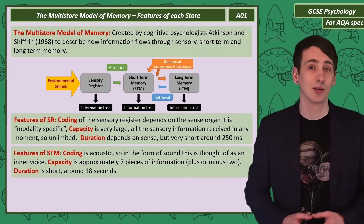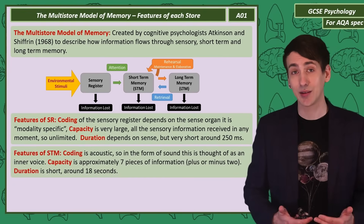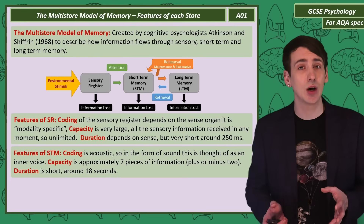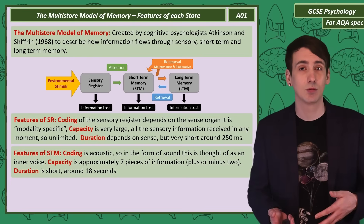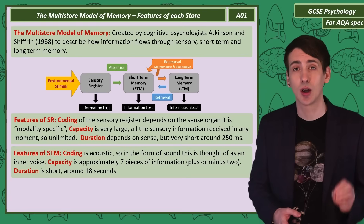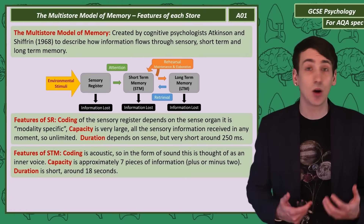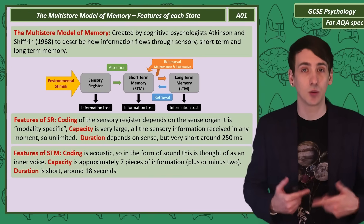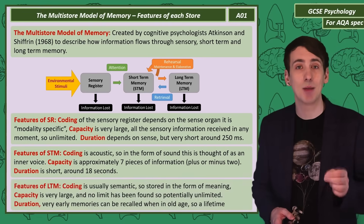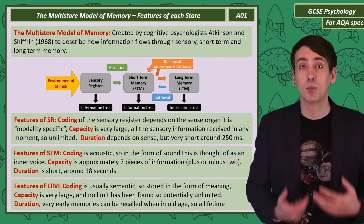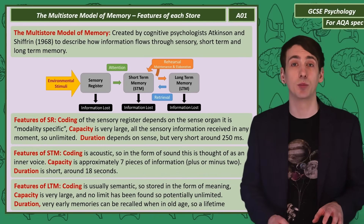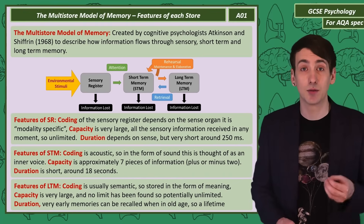Moving to the short-term memory store: the coding is acoustic, so an inner voice. The capacity seems to be very small — it's around seven items, so with some variability, some people can remember a little more or a little less. We say seven items plus or minus two. How long you can hold that information is very short, around about 18 seconds. Anything not passed to long-term memory by then or repeated with your inner voice is lost. As for long-term memory, its coding is semantic — information in the form of meaning. Both the capacity and the duration appear to be unlimited, and we can see this with older people being able to recall lots of information about their lives even from their earliest years.